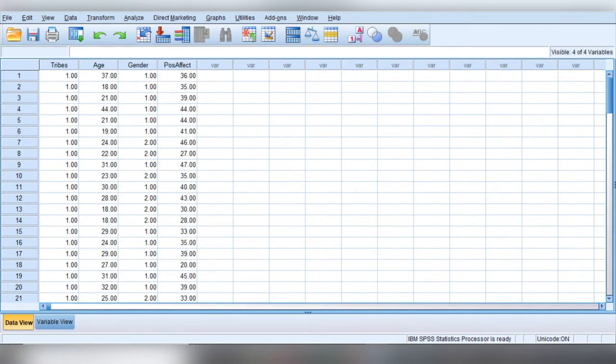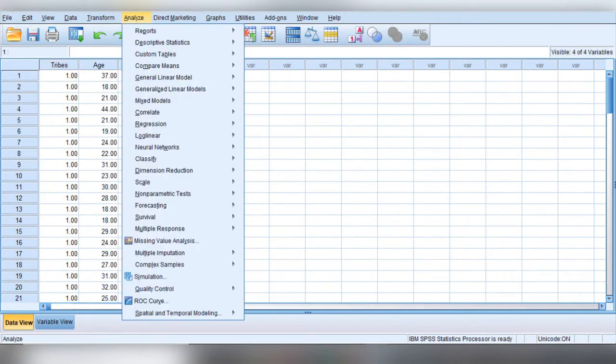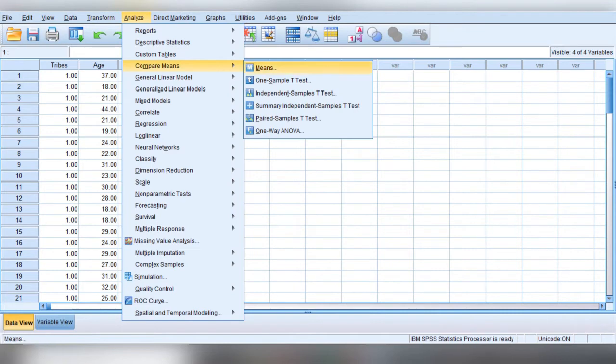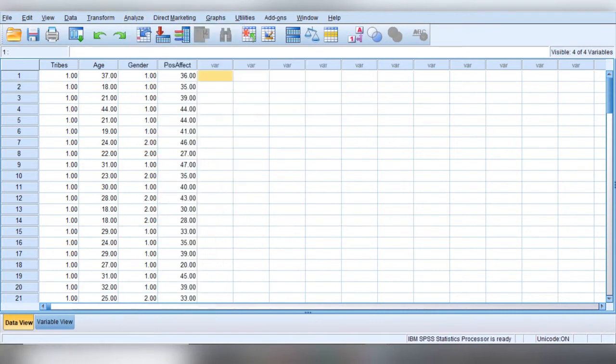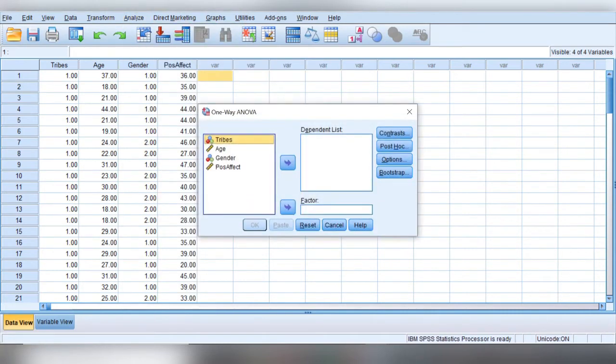While doing the analysis in SPSS, we will choose the tab analyze, then compare means, and then one-way ANOVA. A small window will appear. Our variables are here. We will shift positive affect to the dependent list and tribe to the factor list.